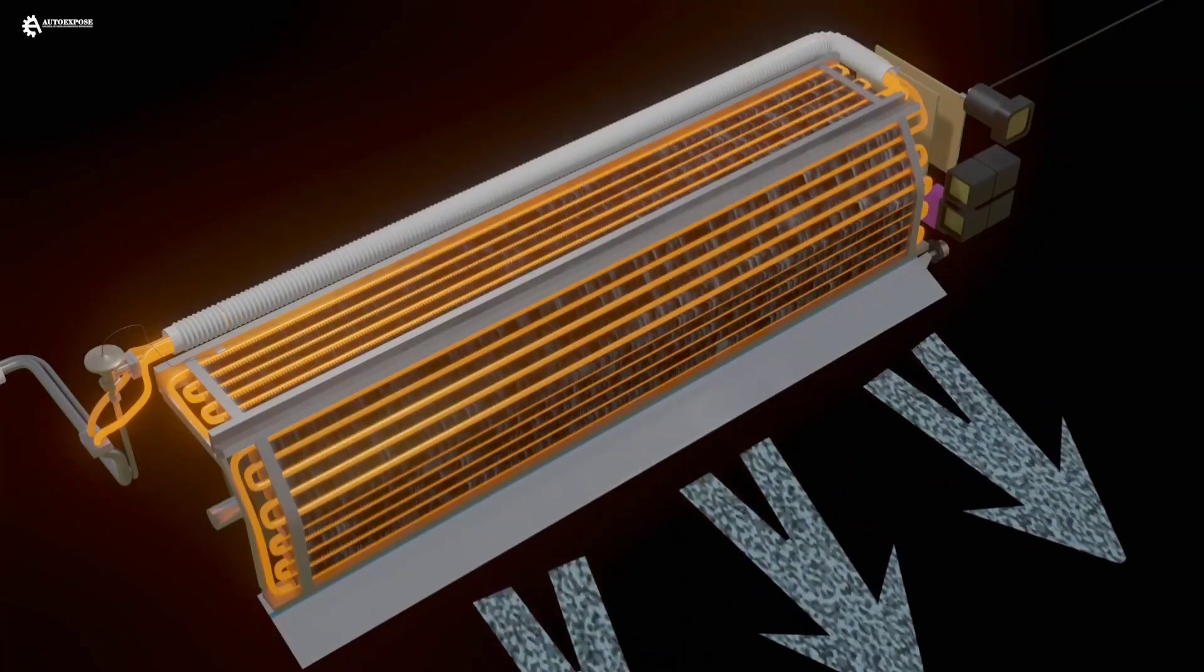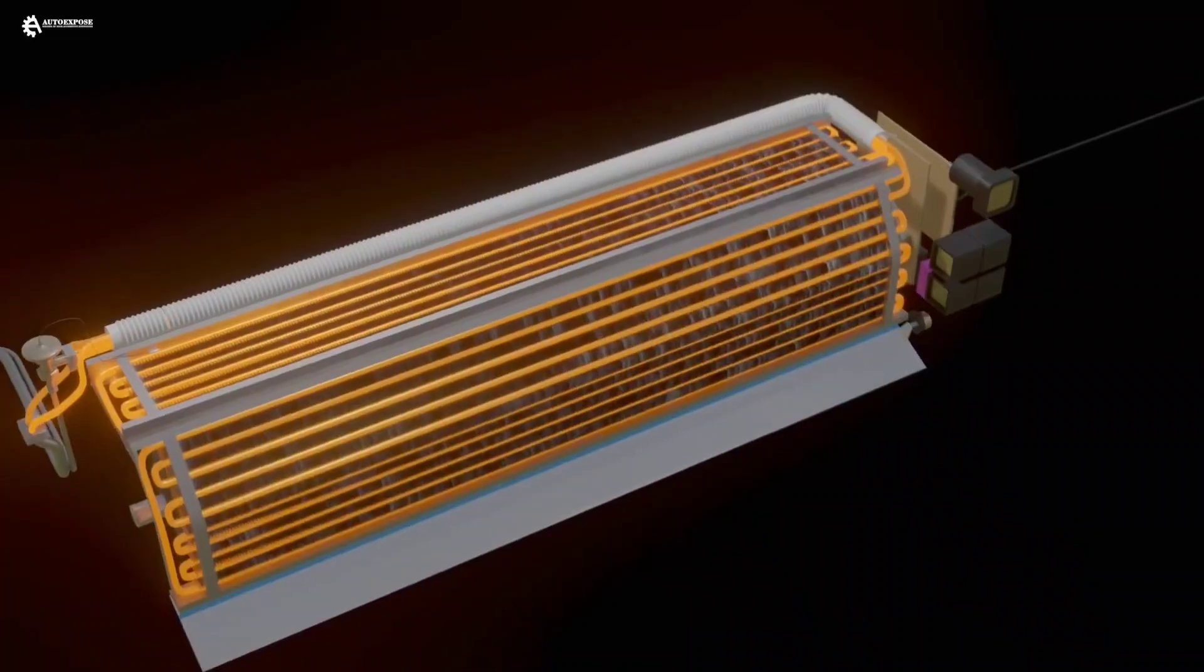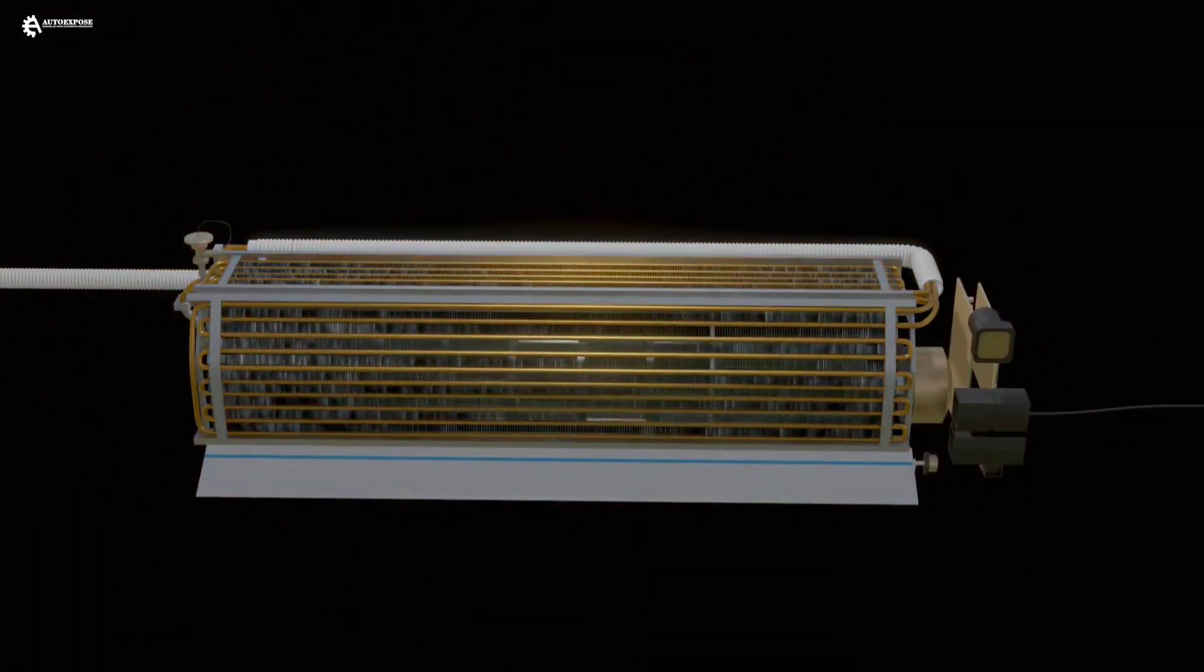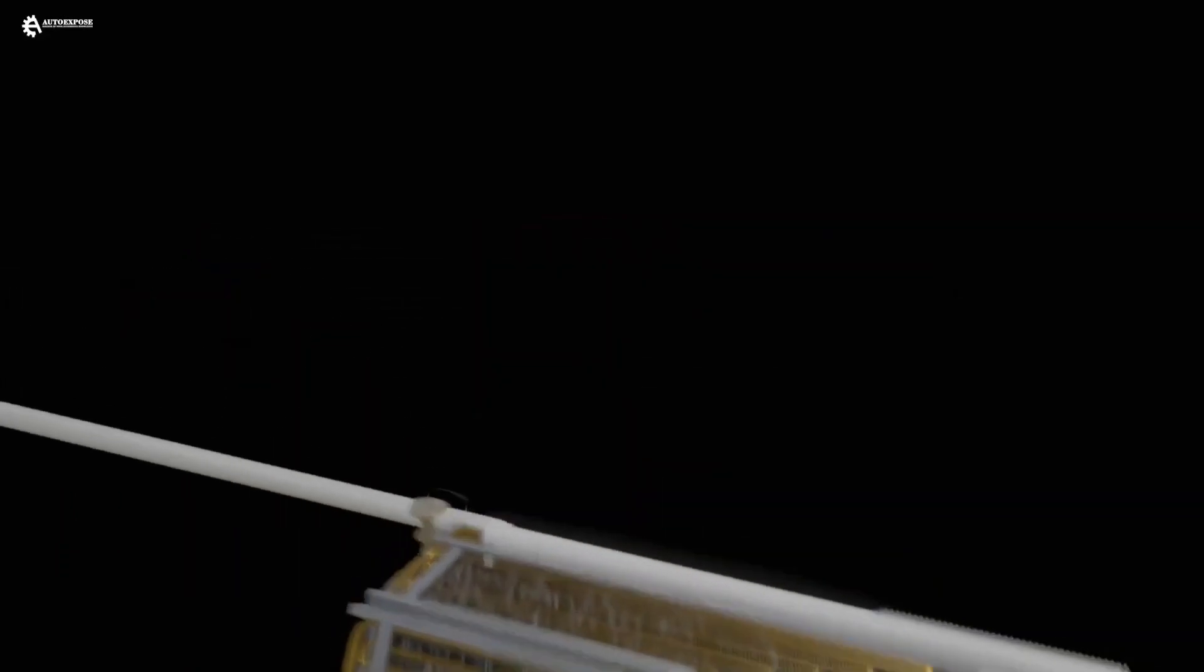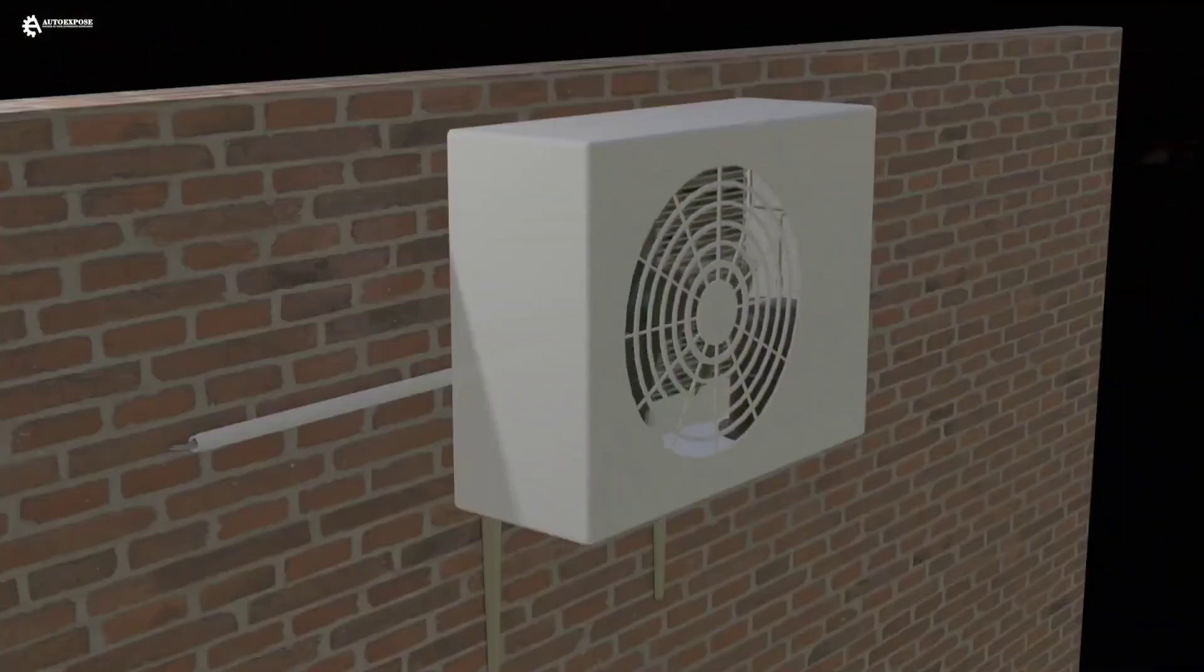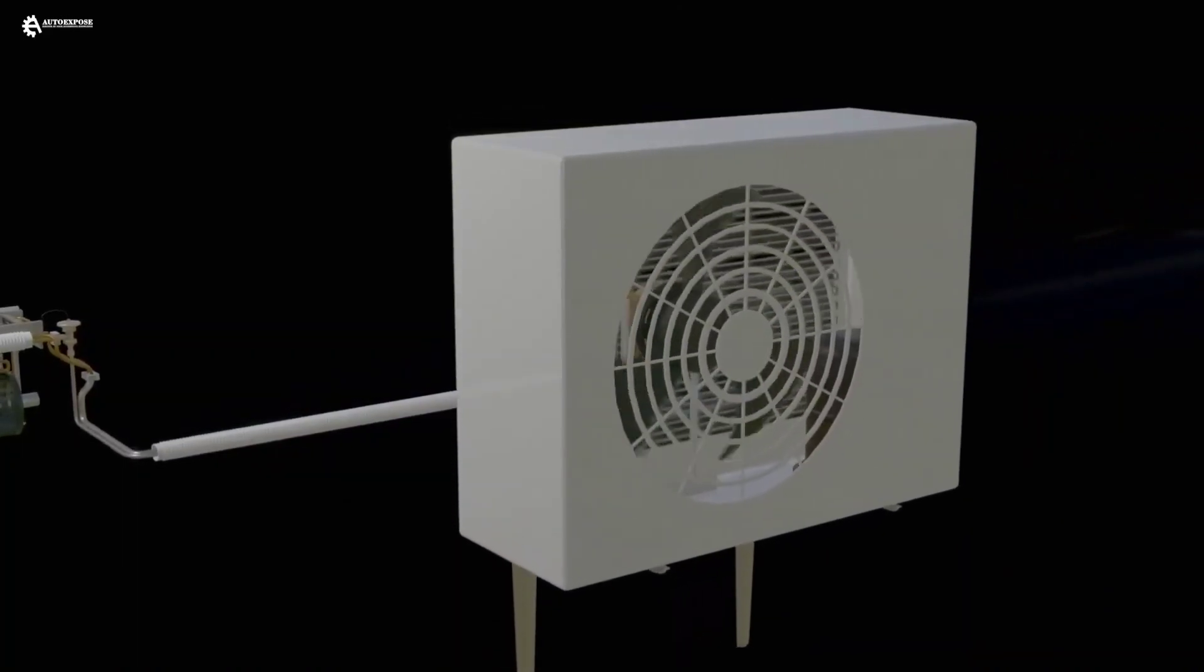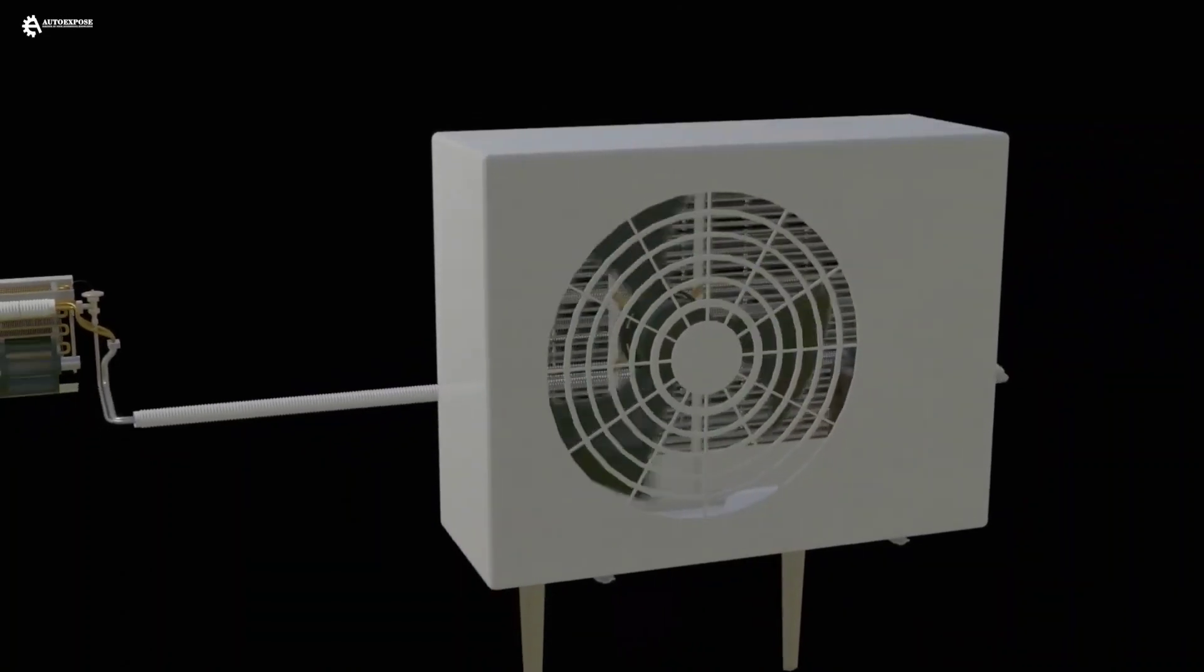However, after the freon absorbs heat, its temperature increases and turns into gas. When the temperature of the freon approaches room temperature, it is no longer able to absorb heat because its temperature is balanced. In order for the freon to reabsorb heat, the temperature of the freon needs to be lowered, and its form must be returned to liquid form.